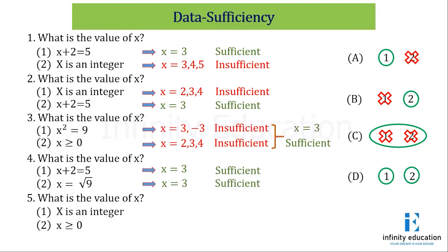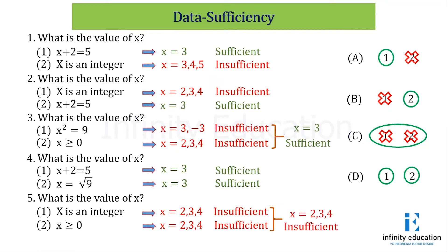Next question: what is the value of x? Statement 1 says x is an integer — insufficient because 2, 3, 4 or any integer is possible. Statement 2 says x ≥ 0 — again insufficient because it can be 2, 3, 4. When both are individually insufficient, I combine them. Combining, we are still getting x as 2, 3, 4, because x is an integer and greater than or equal to 0. So combining also we are not getting any definite value — it is still insufficient. E is the answer because they are not only individually insufficient but also insufficient together.